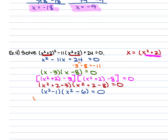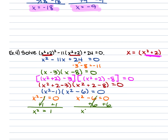Setting each factor equal to 0: x squared minus 1 equals 0 gives x squared equals 1, and x squared minus 6 equals 0 gives x squared equals 6. Taking the square root of both sides, x equals plus or minus the square root of 1, which is plus or minus 1, as well as x equals plus or minus the square root of 6.